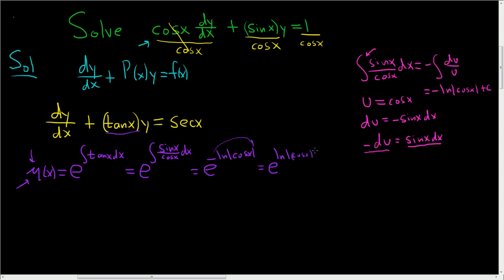So this is really e natural log absolute value of 1 over cosine x. So this is really e natural log, and then it's secant x. Now this is equal to the absolute value of secant x. We want to get rid of the absolute value, so we will. So this will be secant x.